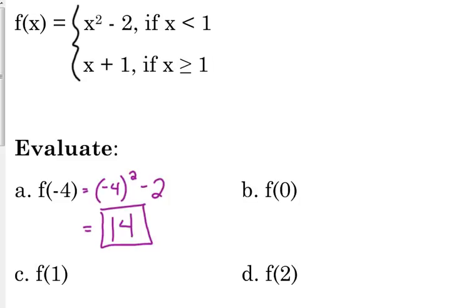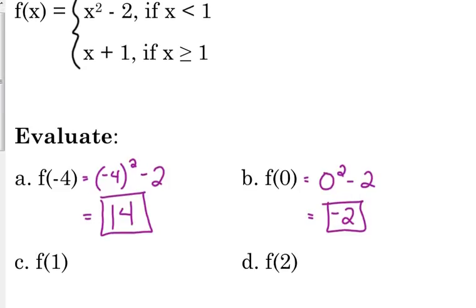f of zero. Is zero less than one or greater than one? Less than one. So we're plugging it into the same piece. Zero squared minus two gives us negative two. Now here's where it matters where the equal to is. f of one. Notice the second one is the one that has the equal to, so that means we're going to plug one into the second piece. One plus one gives us two. And then f of two. Obviously I picked one that was greater than one, so we had another one to plug into the other piece. Two plus one is three.